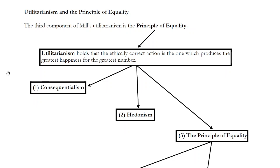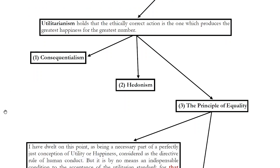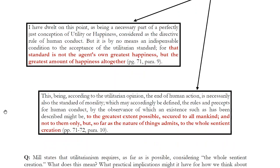In this video we're going to look at how utilitarians and how Mill answers that question. They answer it with what we'll call the principle of equality. There are a couple of passages from Utilitarianism where Mill explains his view. Mill tells us the standard of utilitarianism is not the agent's own greatest happiness, but the greatest amount of happiness altogether.